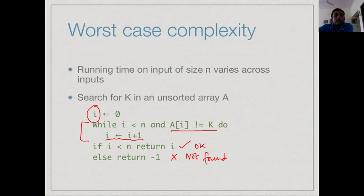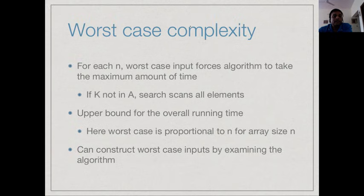In this algorithm the bottleneck is this loop, which can take up to n iterations. When will it take n iterations? That is the worst case. The worst case is when it must go to the end, either if the last element is k or more generally if there is no copy of k in the array. If there is no k, we have to scan all elements to determine that k does not exist.